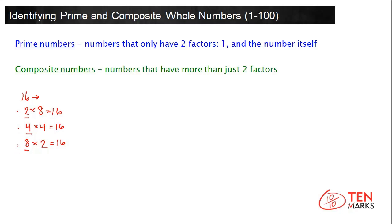Remember, a number can be multiplied by 1 and itself, so 1 and itself are always factors. 1 times 16 equals 16, and 16 times 1 equals 16, so 1 and 16 are also factors. Every number has at least two factors: 1 and itself.